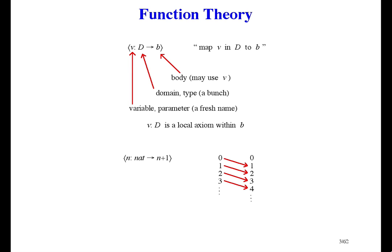Here's an example function and a picture of it. It introduces local variable n with domain nat, and the body or result is n plus one. In the picture, the domain is the left column, and the result is the right column, and the arrows are saying that each domain element is mapped to its successor. This is called the successor function.